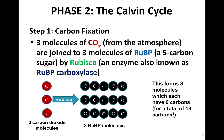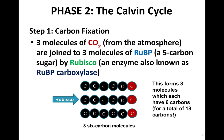RuBP stands for ribulose bisphosphate. One important thing to note: before CO2 is incorporated, we start with 15 carbon atoms total — three five-carbon RuBP molecules. After rubisco adds the CO2 to the RuBP, we get three six-carbon molecules. So we've gone from 15 carbons plus 3 carbons from CO2 to produce three unstable six-carbon molecules.